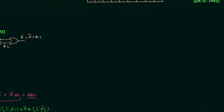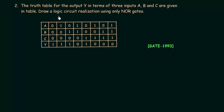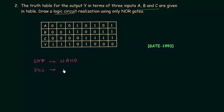Now we move to the second problem taken from the GATE 1993 paper. We have to draw the logic circuit realization using only NOR gates. The truth table for output Y in terms of three inputs A, B and C is given. Whenever you have to implement any logic circuit using NOR gates or NAND gates, the first thing is to find SOP or POS form — SOP for NAND gates and POS for NOR gates.